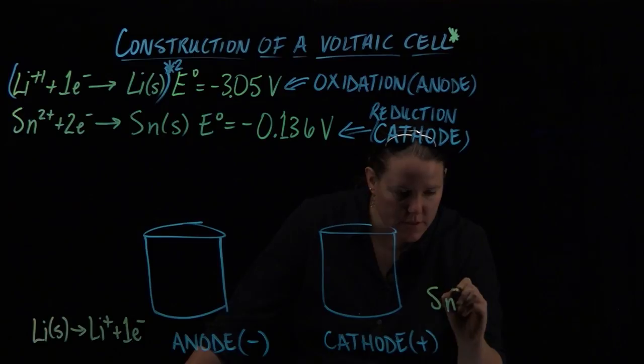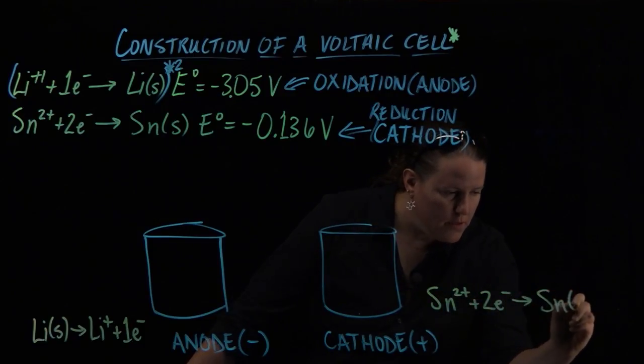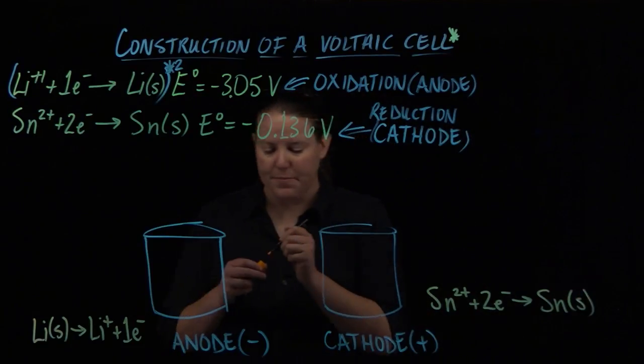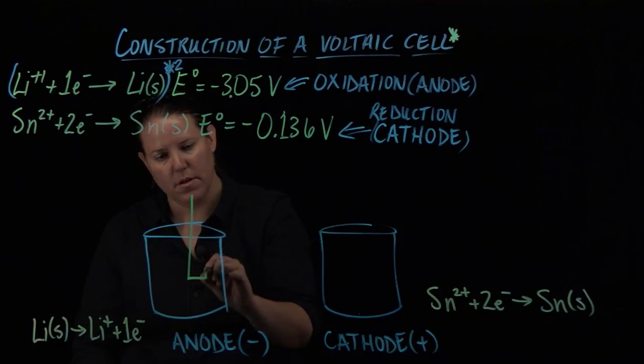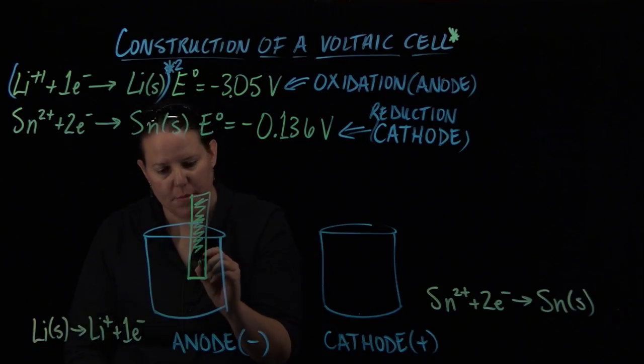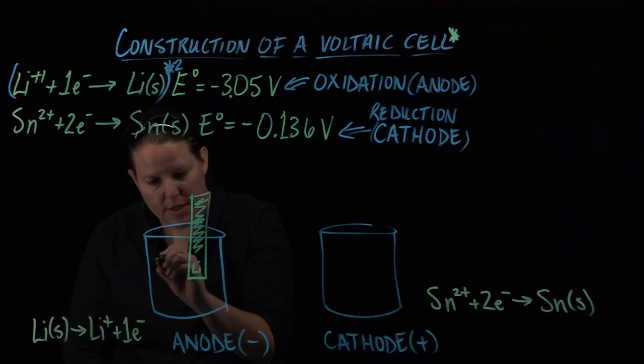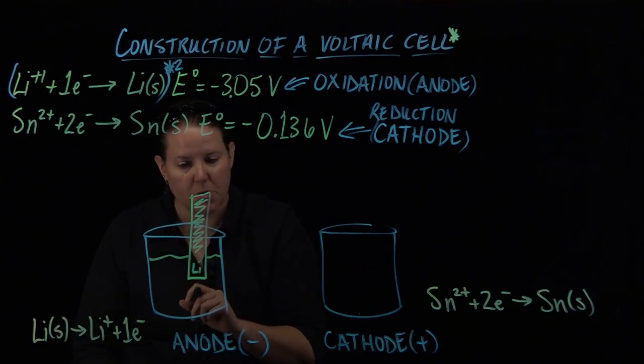And then we know that for the cathode we would have the opposite. It would have tin written as it's written here, so tin 2+ plus 2 electrons goes to tin as a solid. Now we're going to draw in our electrodes and there's some standard pieces that are always the same.